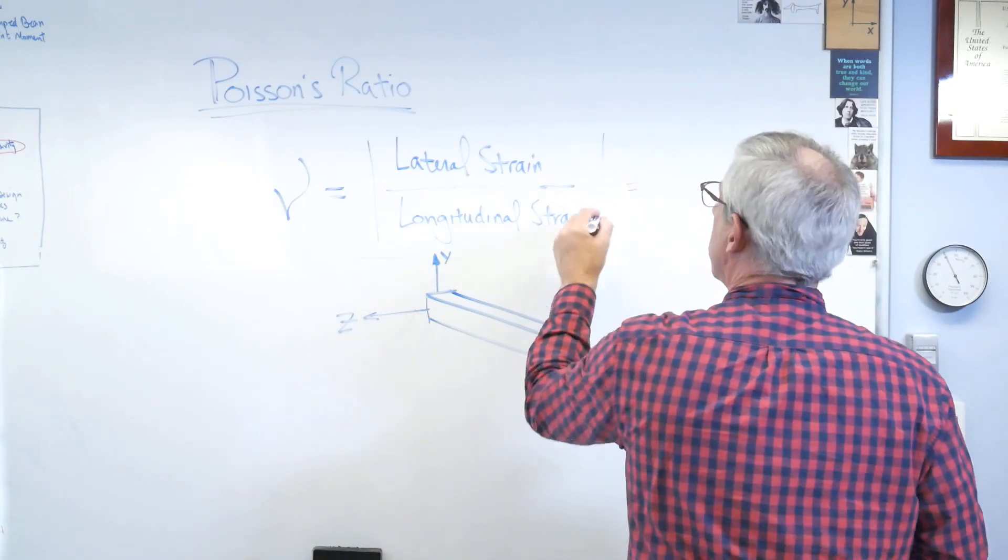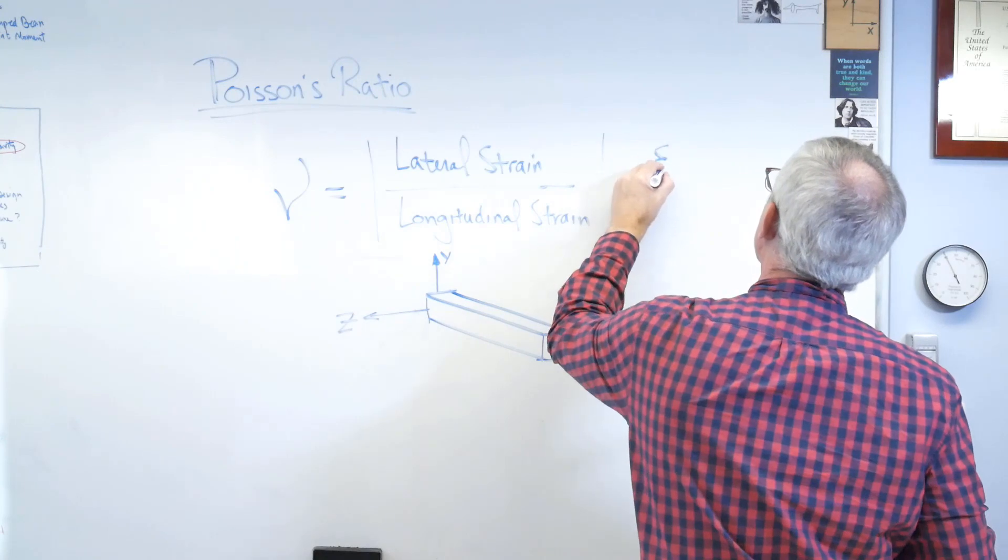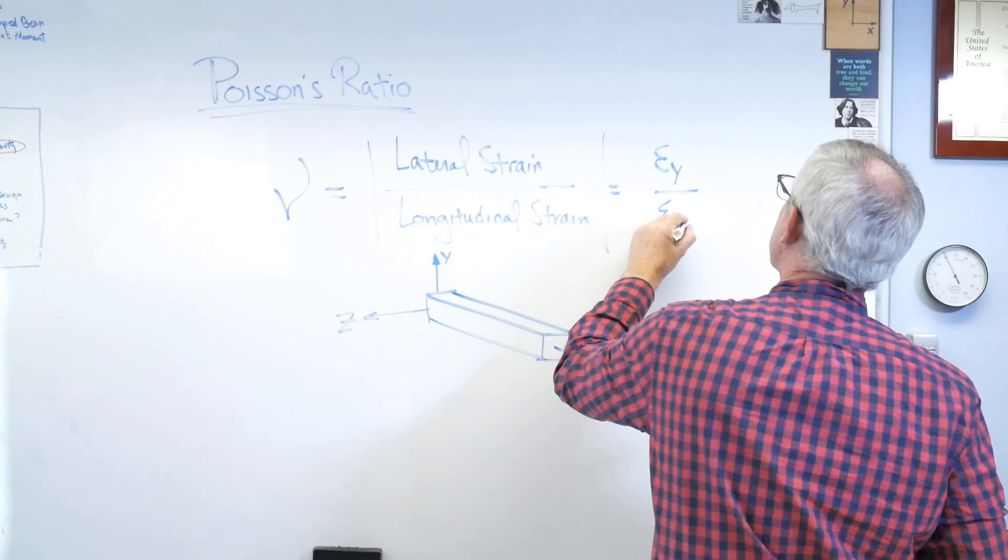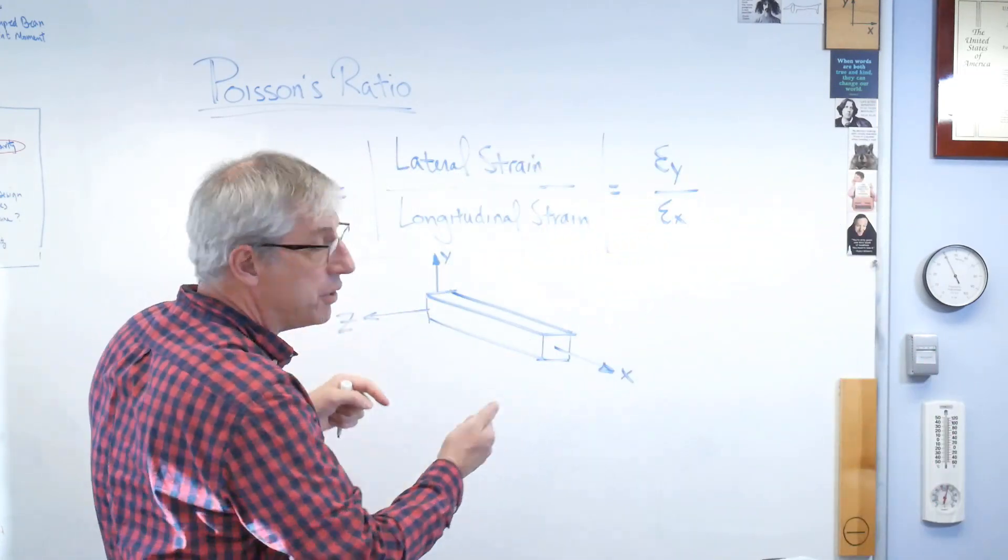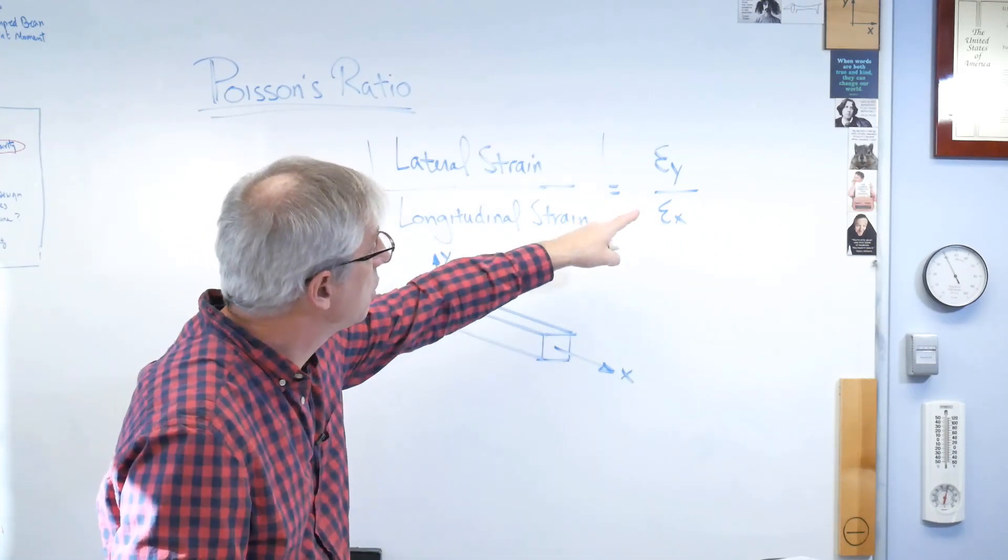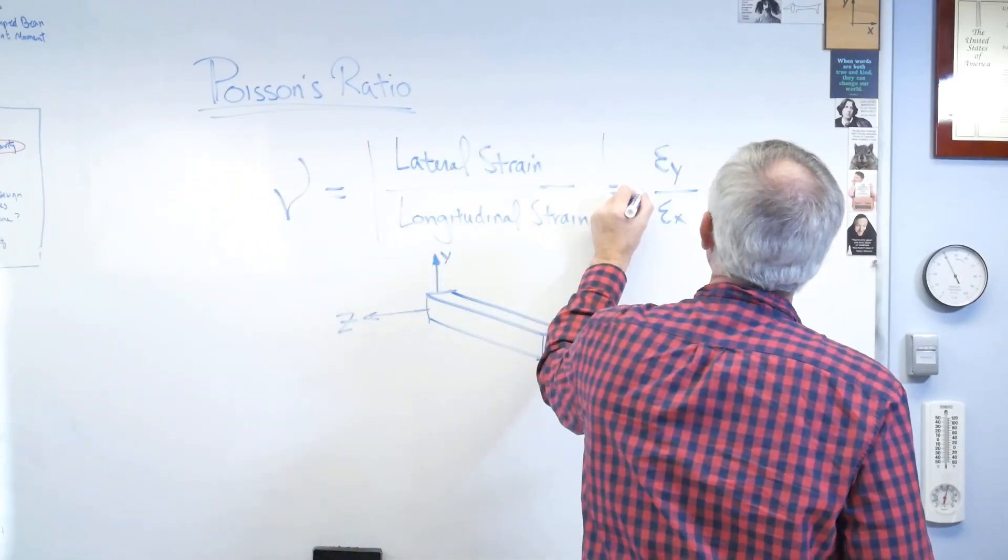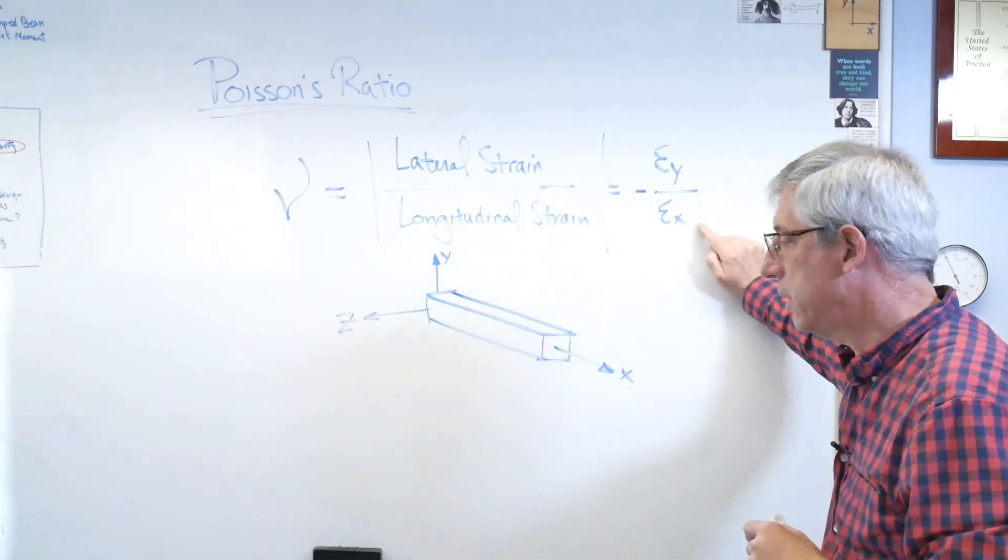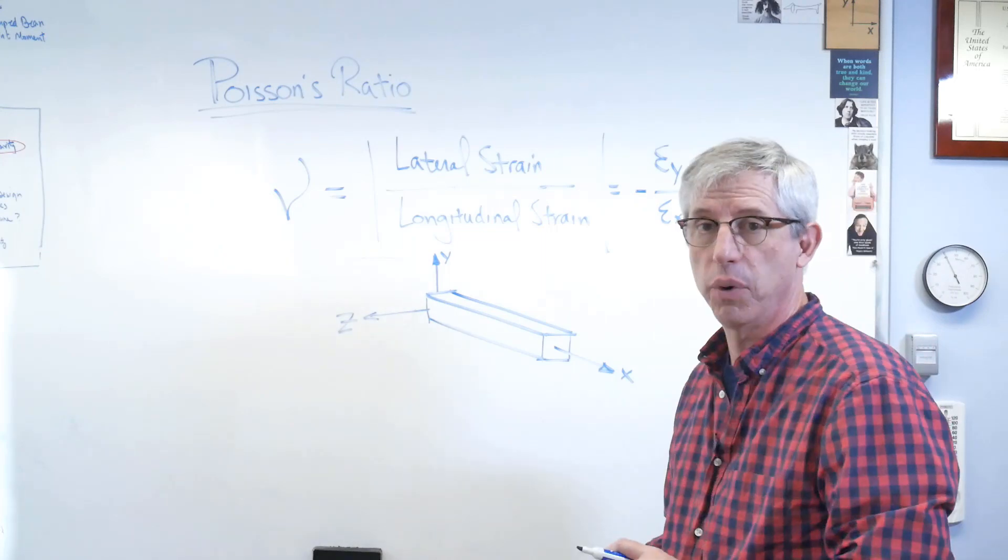So lateral strain is strain either in the x or the y or the z direction. So let's write the y direction there. And lateral is in the x direction. Now, remember, if you stretch this way, if you stretch in the x direction, the material actually gets smaller in the y and the z direction. So this is going to come out negative if we don't do something. And the thing we're going to do is simply just put a minus sign in there. So again, Poisson's ratio is always positive. So that's the definition of Poisson's ratio.